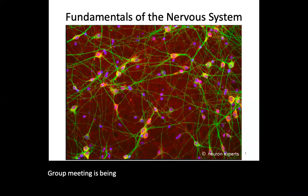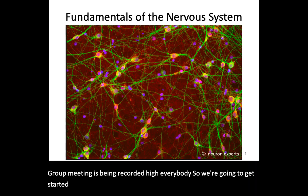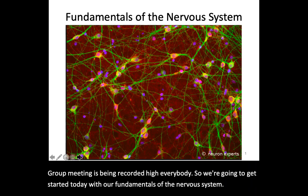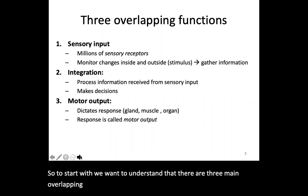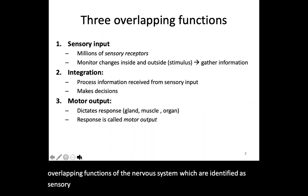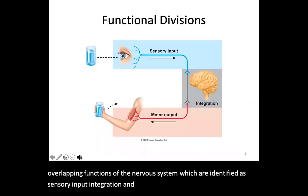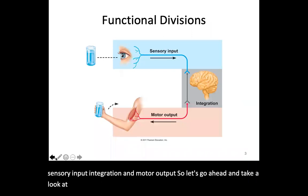We are going to get started today with our fundamentals of the nervous system. To start with, we want to understand that there are three main overlapping functions of the nervous system, which are identified as sensory input, integration, and motor output. Let's go ahead and take a look at this picture to start with.